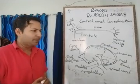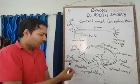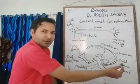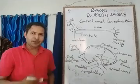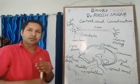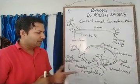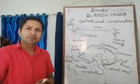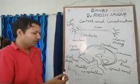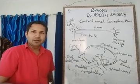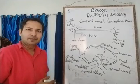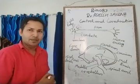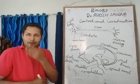This diagram represents the structure of the brain. The brain is divided into three parts: forebrain, midbrain, and hindbrain. The forebrain is the thinking part of the human body. The hindbrain consists of different parts including the medulla and cerebellum. The cerebellum is responsible for posture and balance of the body.